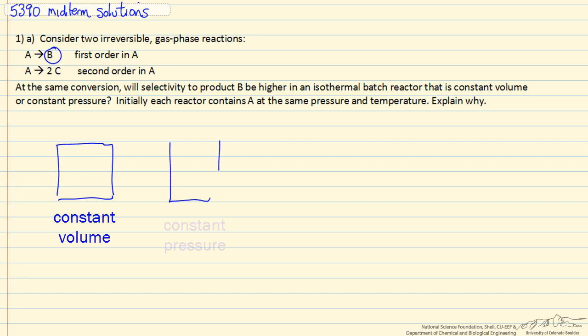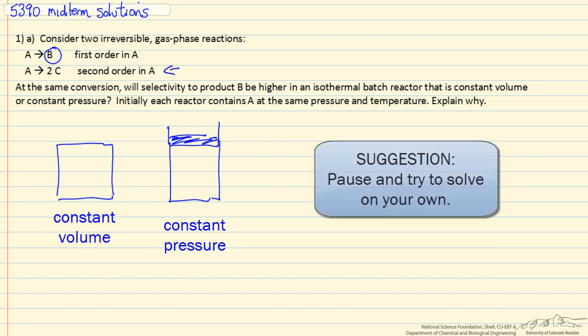We carry it out in a piston and cylinder arrangement at constant pressure, so the piston would move up as the reaction proceeds because this reaction increases the number of moles. Which one will give us the higher selectivity towards B? We're keeping the temperature constant and start out the same conditions.